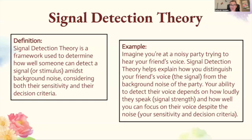Signal detection theory is a framework used to determine how well someone can detect a signal or stimulus amidst background noise, considering both their sensitivity and their decision criteria. Imagine you're at a noisy party trying to hear your friend's voice. Signal detection theory helps explain how you can distinguish your friend's voice — the signal — from the background noise. Your ability to detect their voice depends on how loudly they speak, that's their signal strength, and how well you can focus on their voice, your sensitivity and decision criteria.